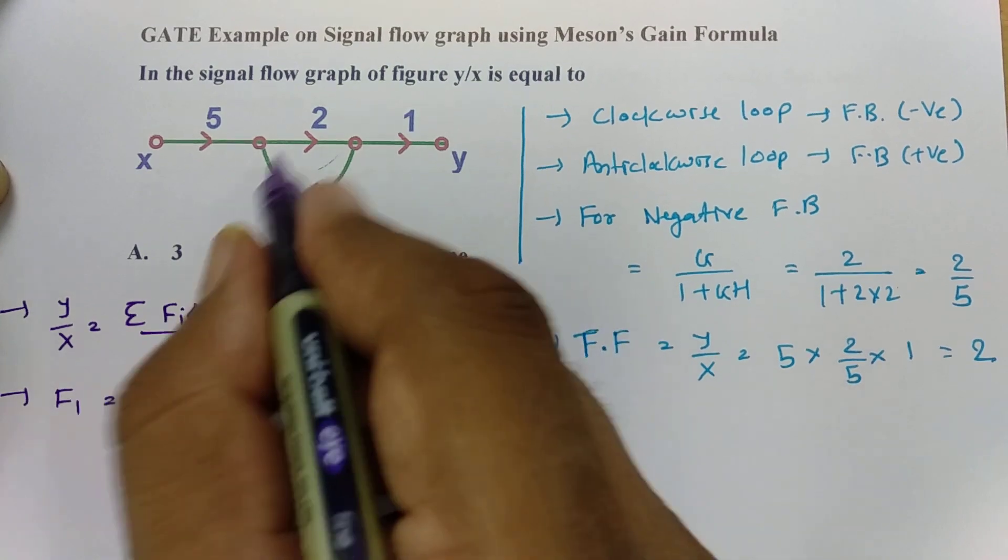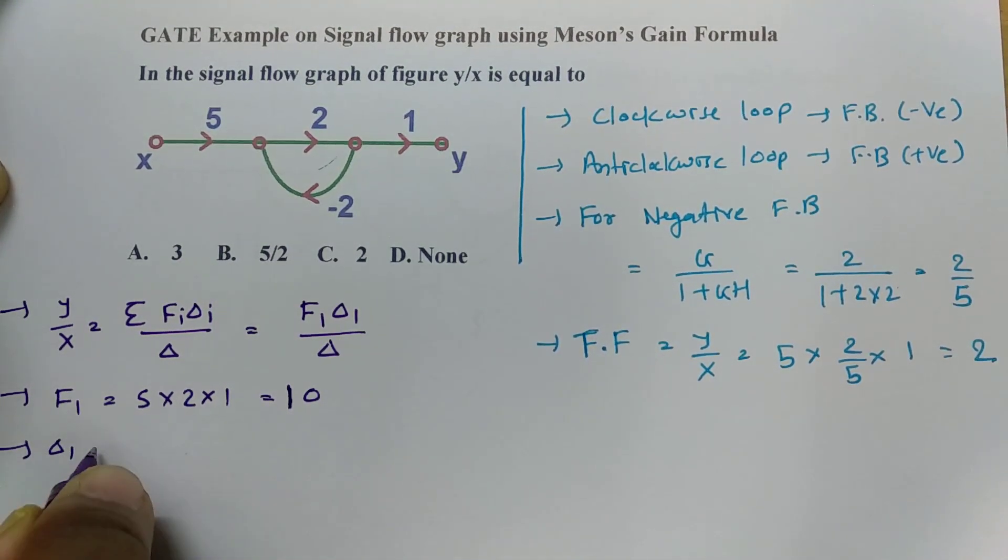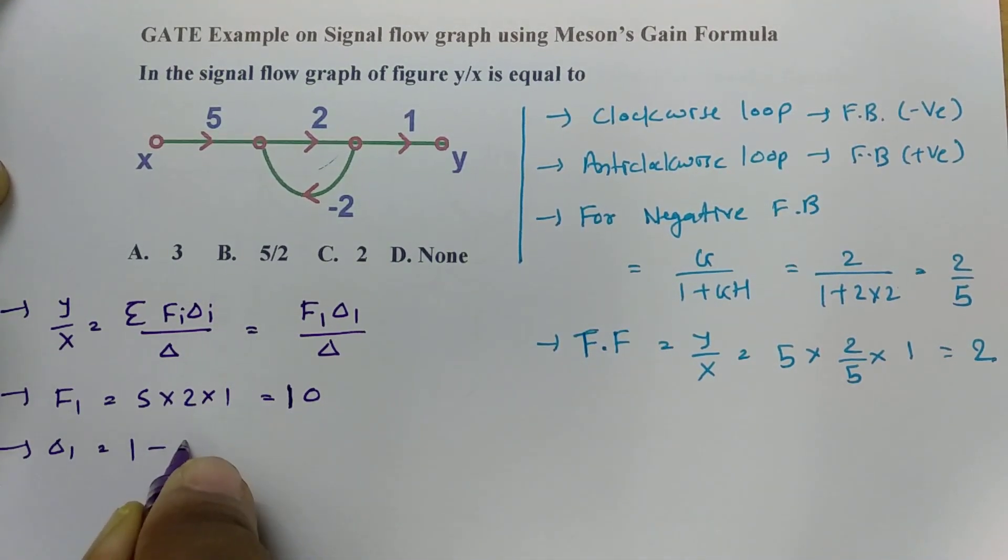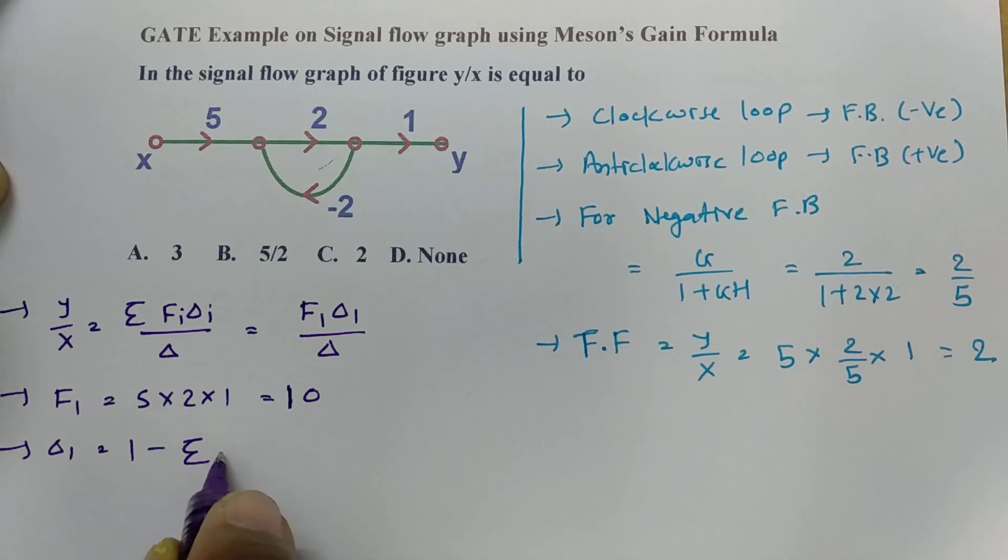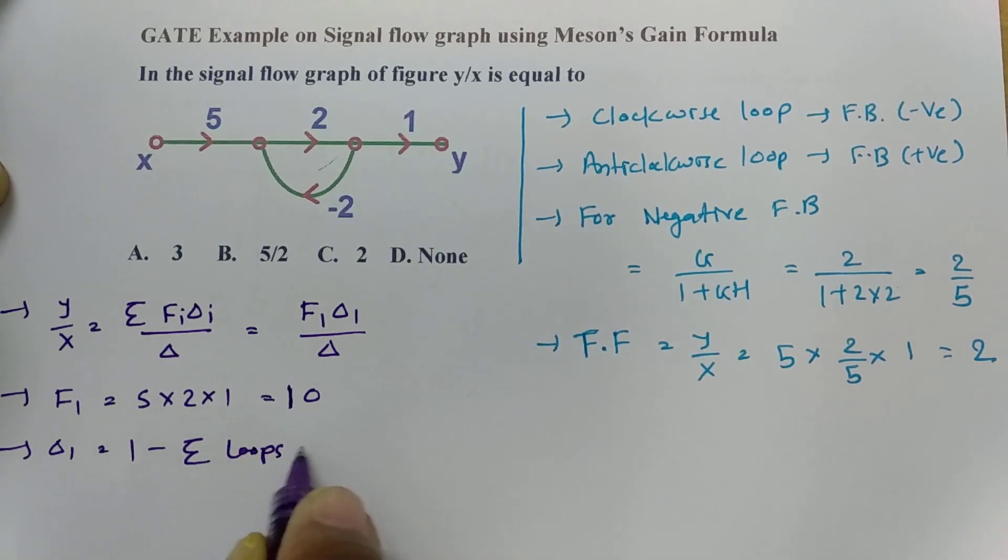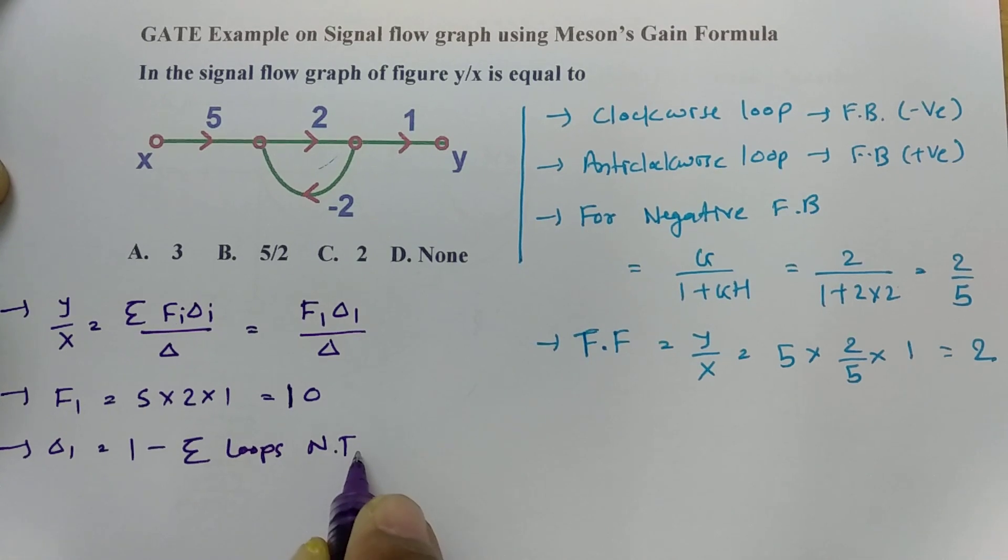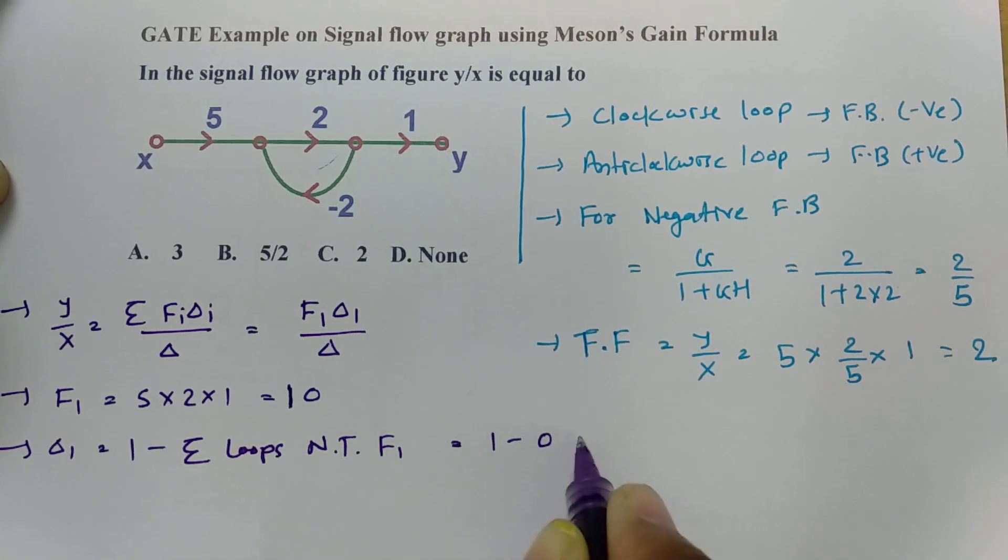And that is touching to this loop. So when you calculate delta 1, that is 1 minus summation of loops not touching F1. So that is actually 1 minus 0, so it is 1.